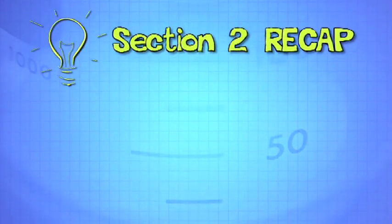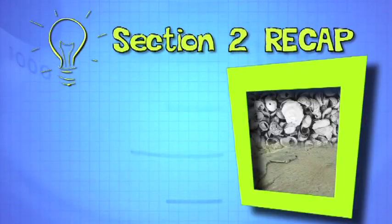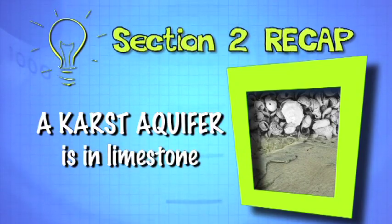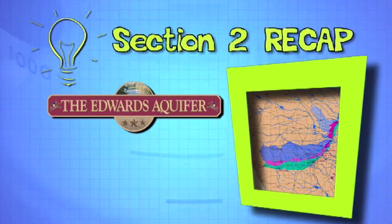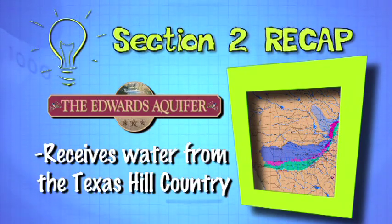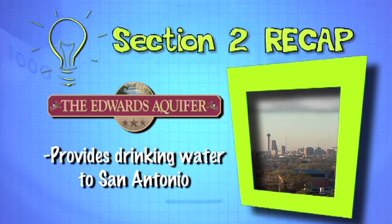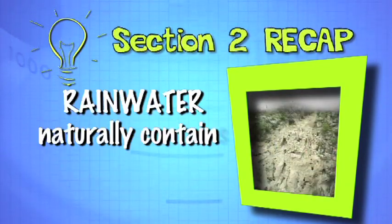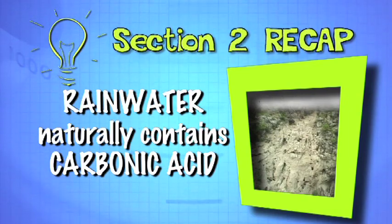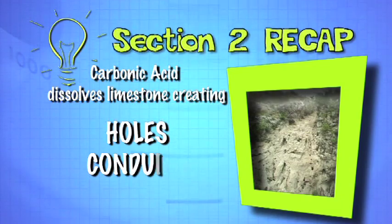What have we learned from this section? We've learned that there is a very special type of aquifer called a karst aquifer. San Antonio has a very large karst aquifer called the Edwards Aquifer that gets its water from the Texas Hill Country. And we San Antonians get our drinking water from it. We know that rainwater naturally contains carbonic acid.